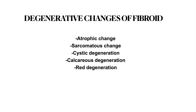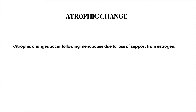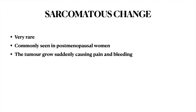The degenerative changes seen in fibroid are atrophic change, sarcomatous change, cystic degeneration, calcareous degeneration, and red degeneration. Atrophic changes occur following menopause due to loss of support from estrogen. Sarcomatous changes are very rare and commonly seen in postmenopausal women, where the tumor grows suddenly causing pain and bleeding.